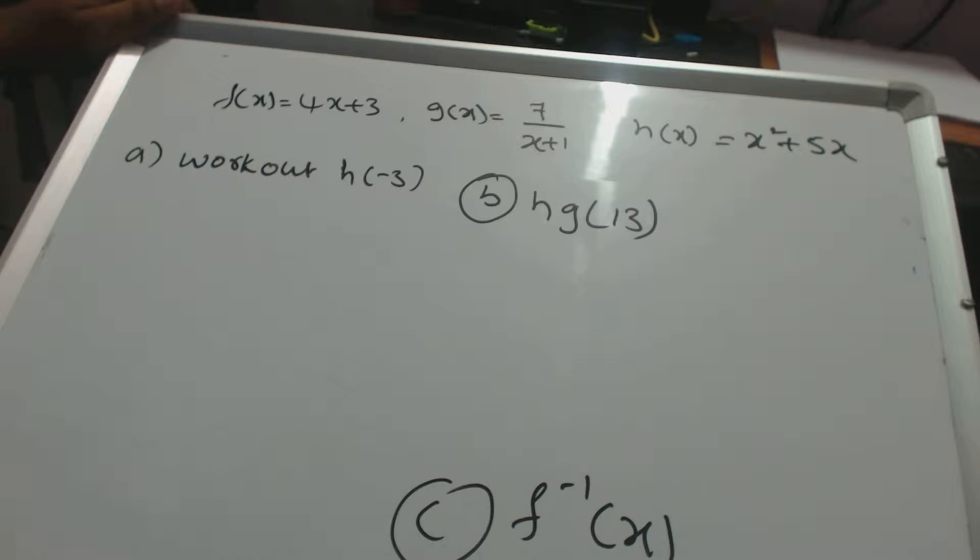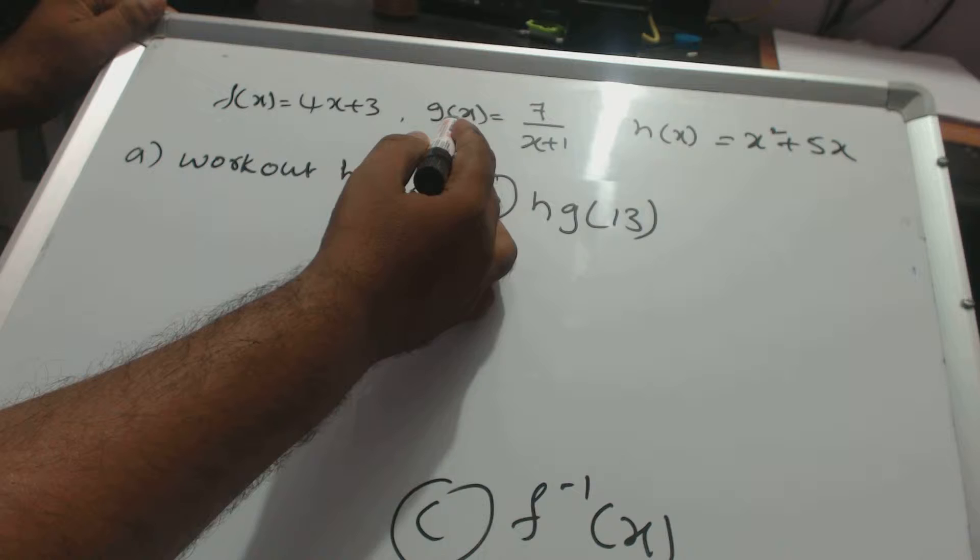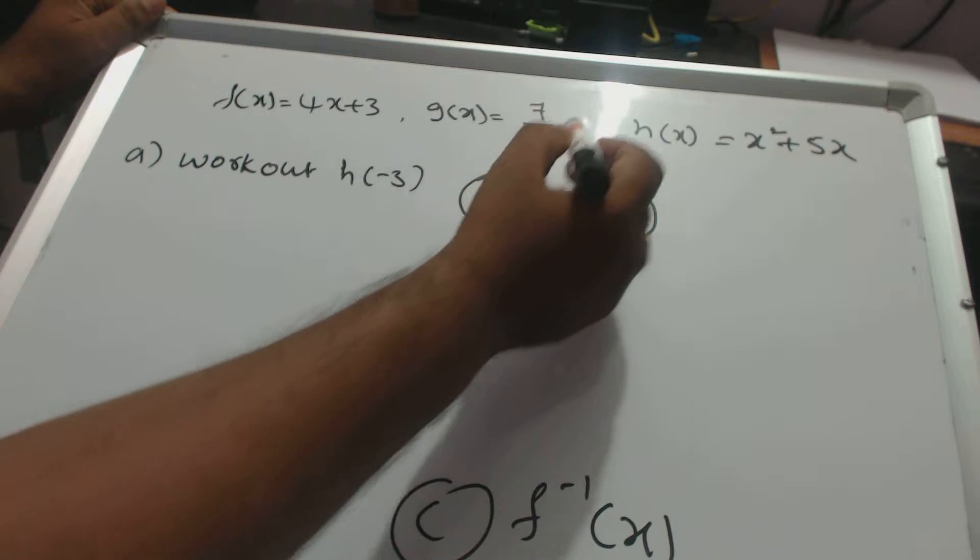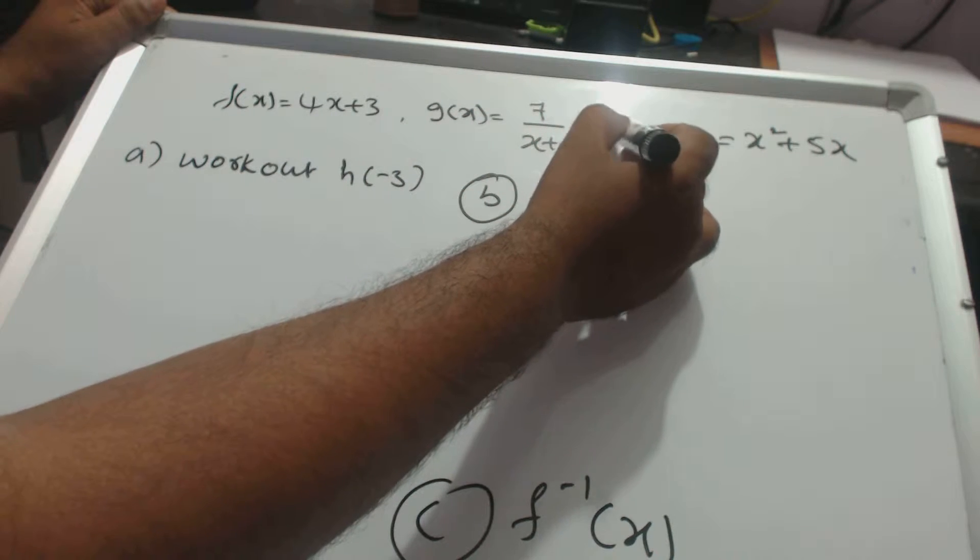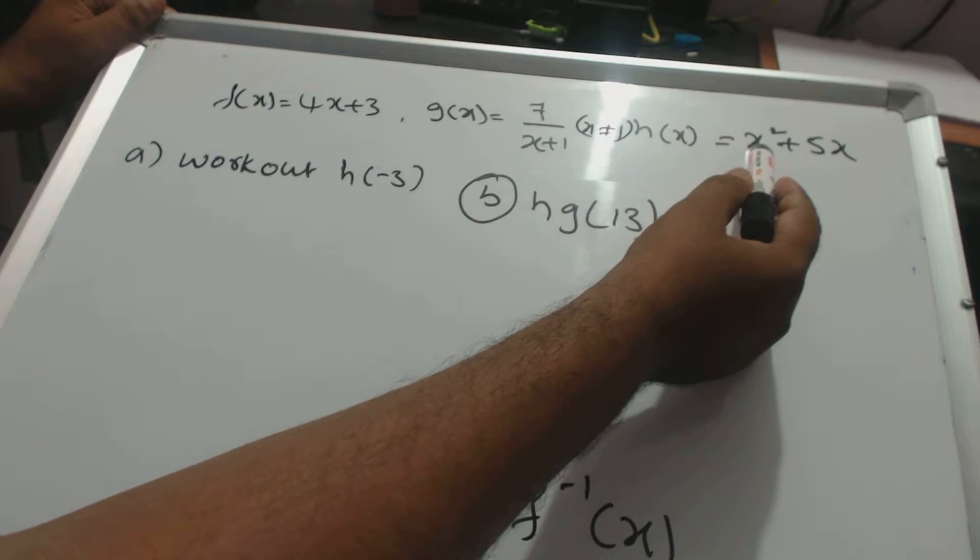Now we will discuss functions, composite functions, and how to make inverse functions. First, we have f(x) = 4x + 3, g(x) = 7/(x+1) where x ≠ -1, and h(x) = x² + 5x.